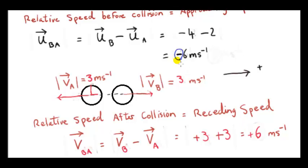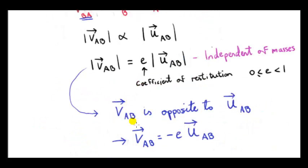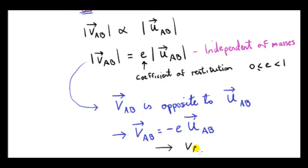The signs are opposite each other — that's an important consideration for the relative velocity before and after the collision. To indicate that VAB is opposite in direction to UAB, we have to include this minus sign, because E is a positive number. So VAB is a negative scalar multiple of vector UAB. We can also write this as VA minus VB equals minus E times UA minus UB.